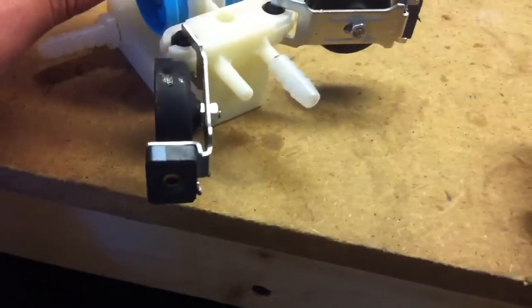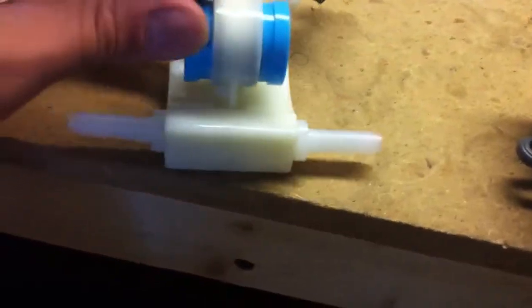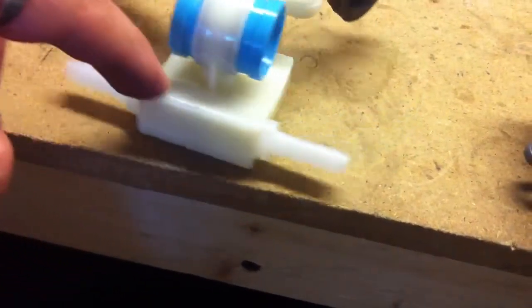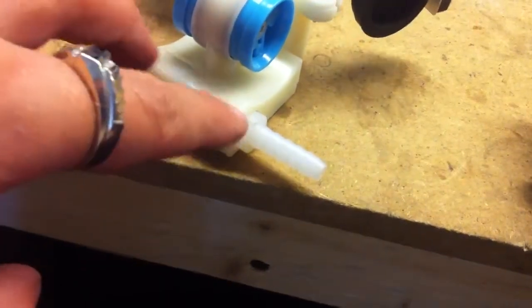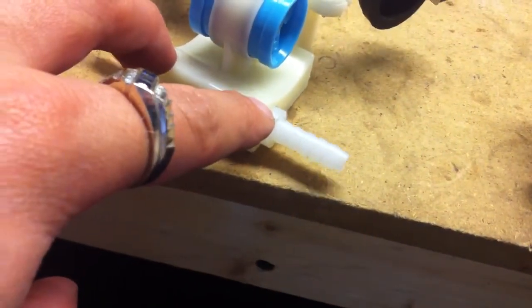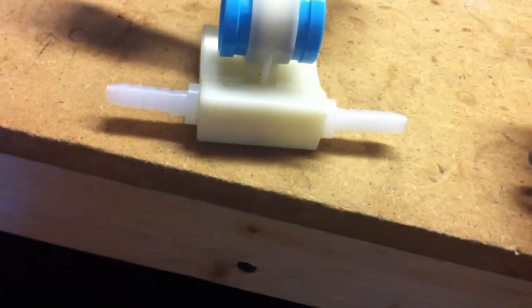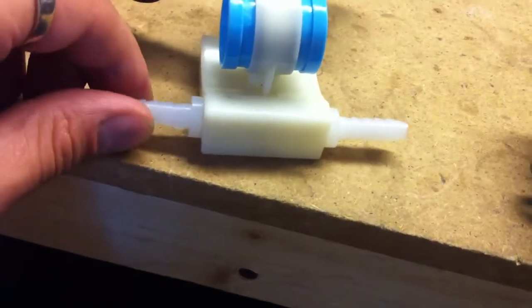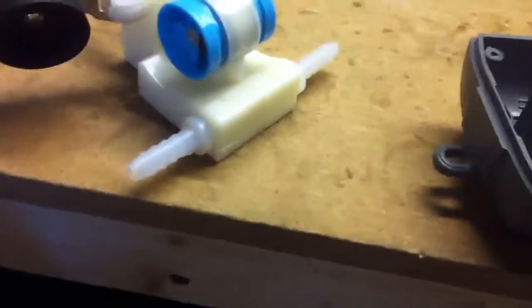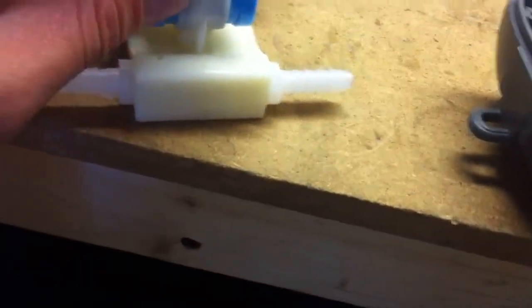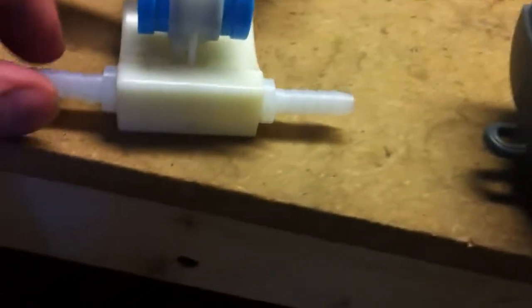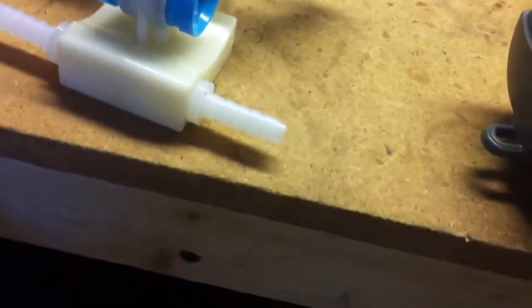Basically what I got going on is I drilled holes in the side of each air chamber, where that's where the air comes in. Then basically I glued them in with some super glue and I'm going to reinforce them with some two-part epoxy.